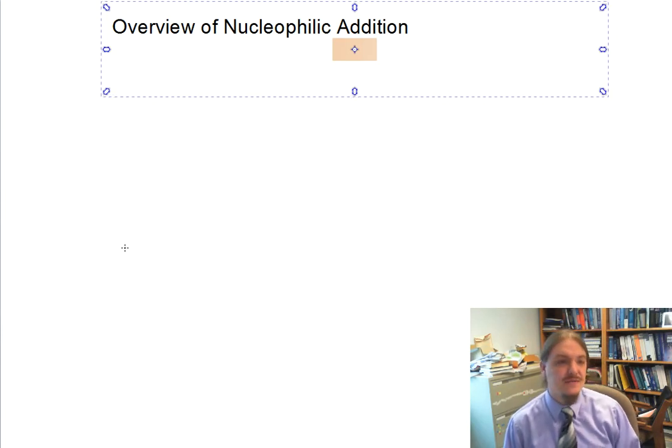Hello. This video is the first in a sequence of videos on ways to synthesize alcohols through nucleophilic addition reactions. This video is going to give an overview of nucleophilic addition as a process and a mechanism, and then we're going to go into two specific types of reactions, hydride transfer reductions and Grignard reactions.